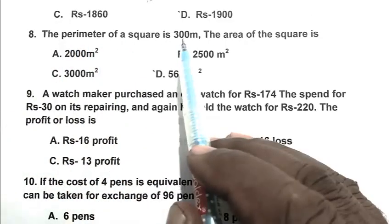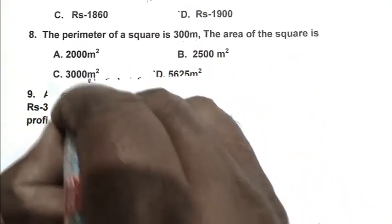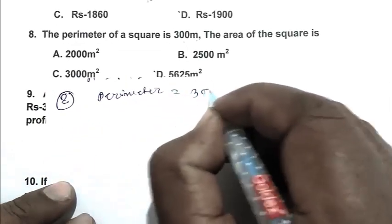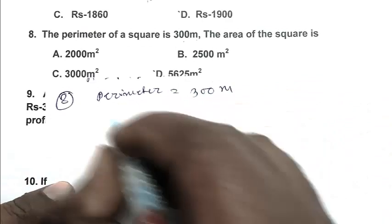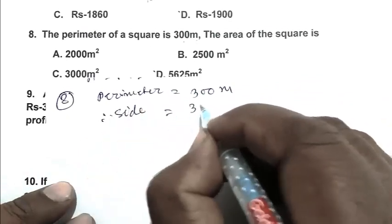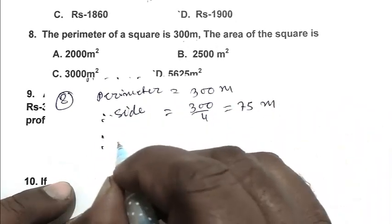Question number eight: the perimeter of a square is 300 meter. The area of the square is. So perimeter 300 meter, therefore side 300 by 4, that is 75 meter. Area 75 square, that is 5,625 meter square. So D is the right answer.